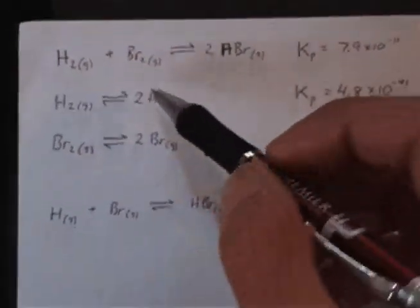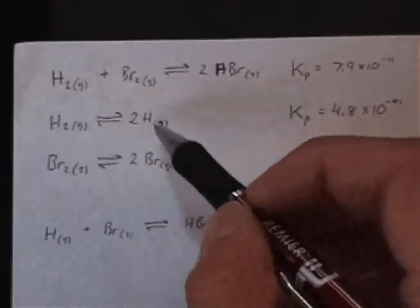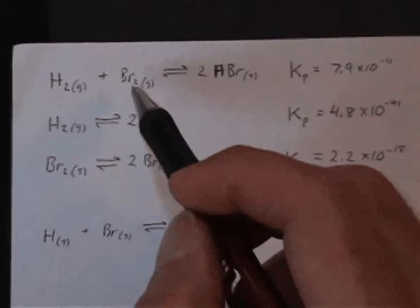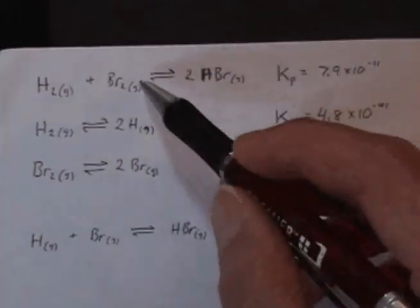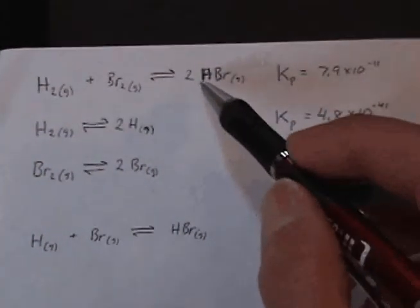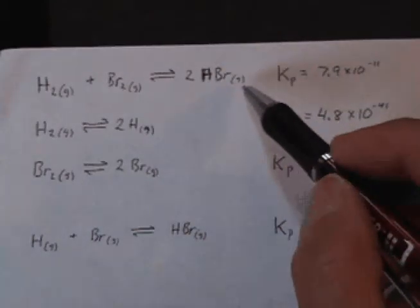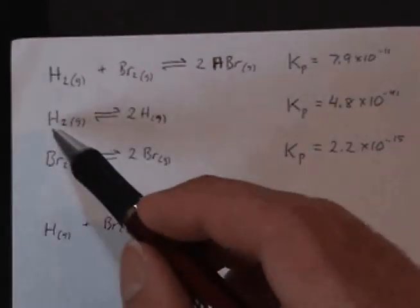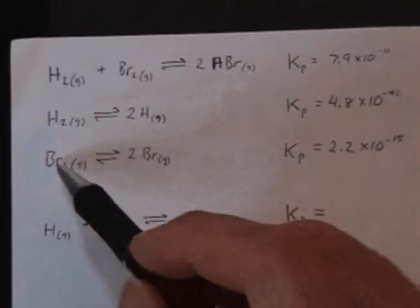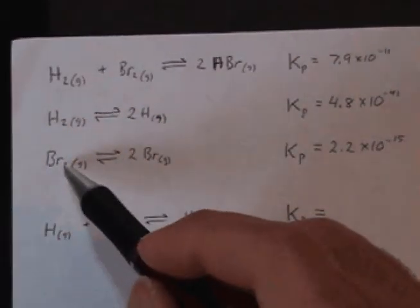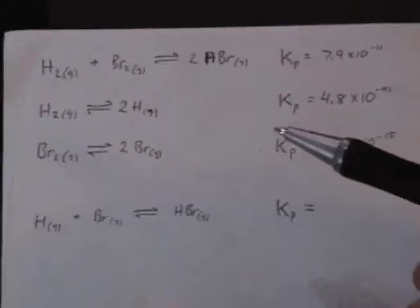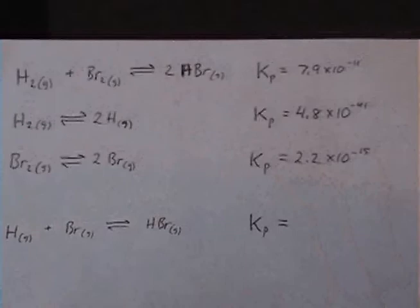So these three equations: hydrogen and bromine gas reacting to form hydrogen bromide vapor, and then the dissociation of hydrogen and the dissociation of bromine vapor into the atoms. Okay, all of this is in the gas phase.